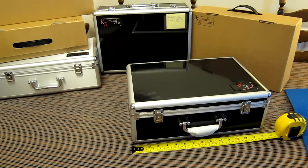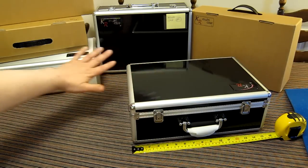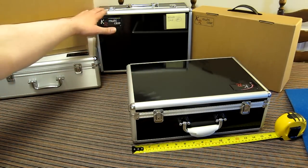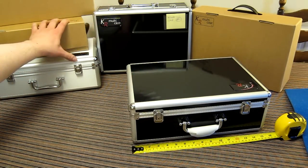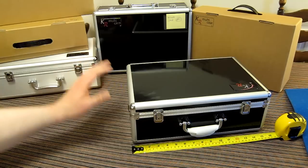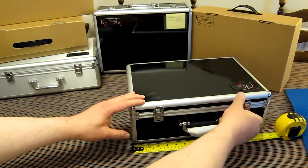Okay, here we have the KR multi-case storage and transport system. I've got here a number of cases, these are what they call the standard size. I've got both in the silver, the black and the cardboard, and I'm going to explain to you how flexible this is.